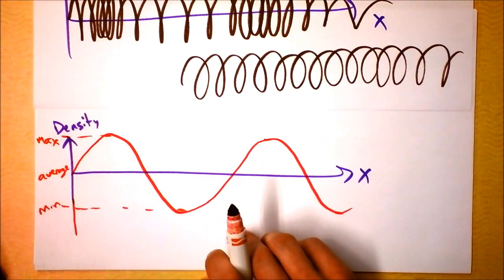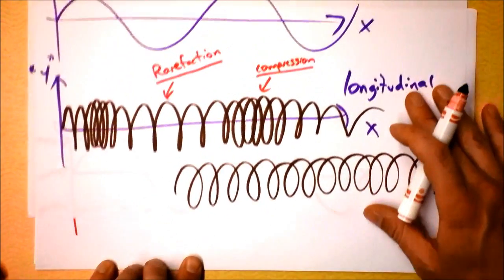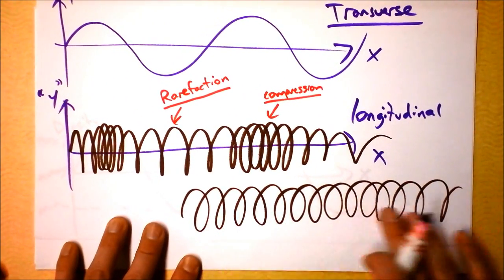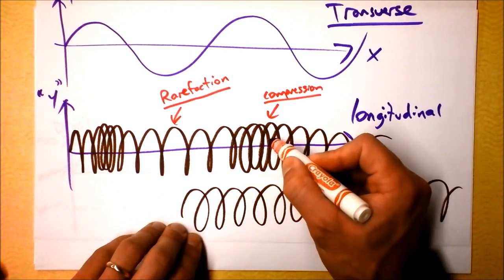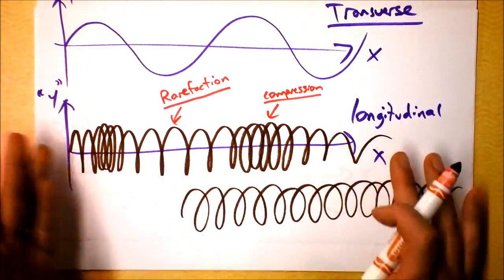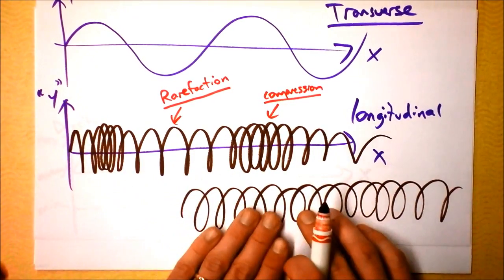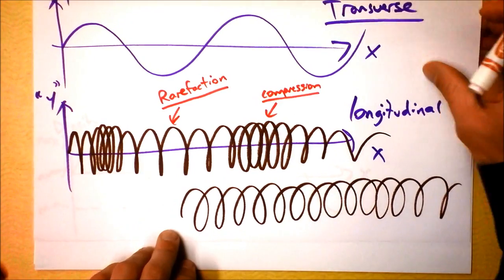So really, longitudinal waves are about deviation from normal. Notice this spring here. This was my unwaved spring, but the compression is denser than the average, and the rarefaction is less dense than the average. So that's how we can see a longitudinal wave in actual life.